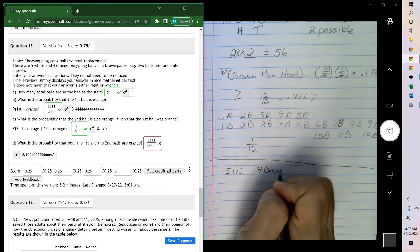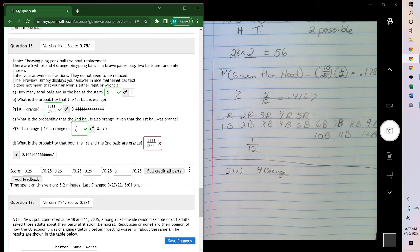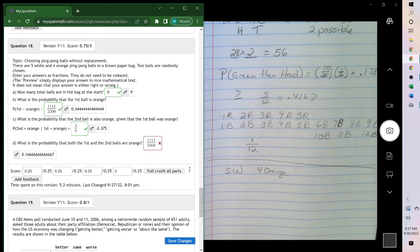There are 5 white, 4 orange ping pong balls in a bag. Two balls are randomly chosen without replacement. It says without replacement at the first part. Enter your answers as fractions, they do not need to be reduced.